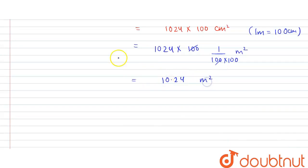1024 meter square. So here we can write it as area of cross-section is equals to 10.24 meter square. This is our final answer of this question.